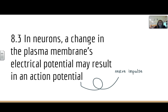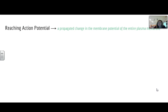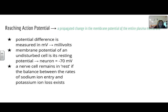A3 talks about how an electric potential may result in an action potential, also known as a nerve impulse. All communications between neurons and other cells occur through membrane surfaces — these are electrical events that occur at great speeds. A characteristic feature of a living cell is a polarized membrane, meaning there is a separation of charge: positive outside and negative inside. This separation causes a potential difference called a membrane potential. The potential difference is measured in millivolts, and the resting potential of a neuron is negative 70 millivolts. A nerve cell remains at rest if a balance between the rates of sodium ion entry and potassium ion loss exists.